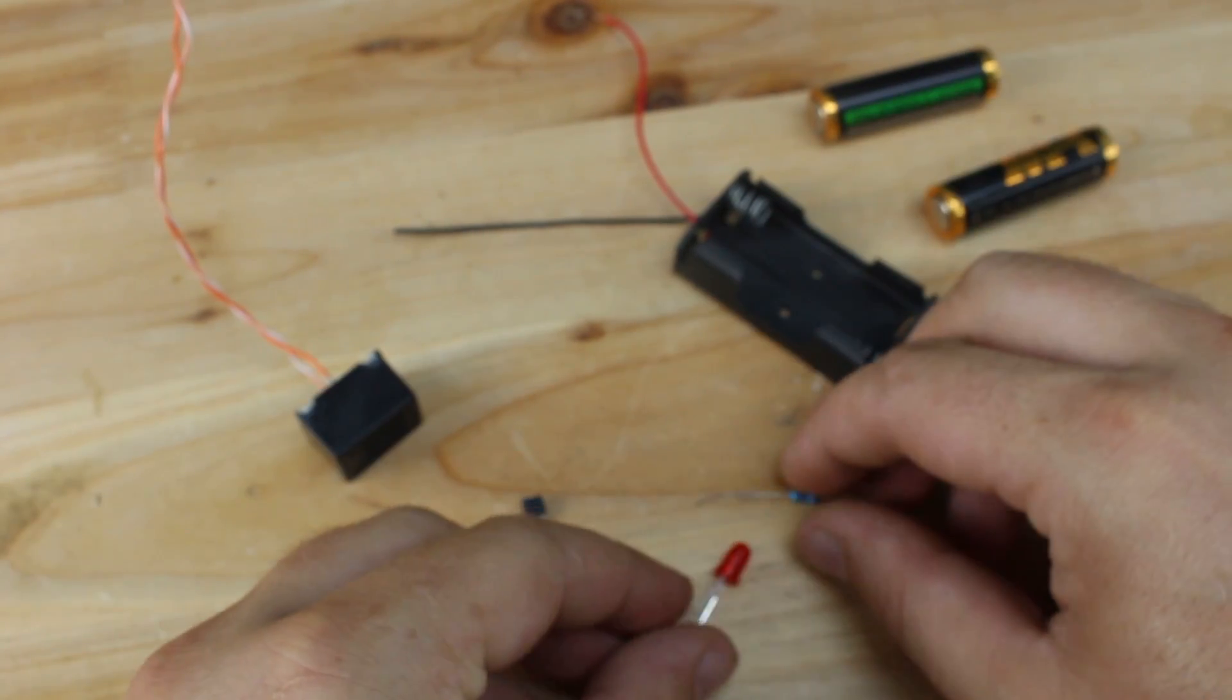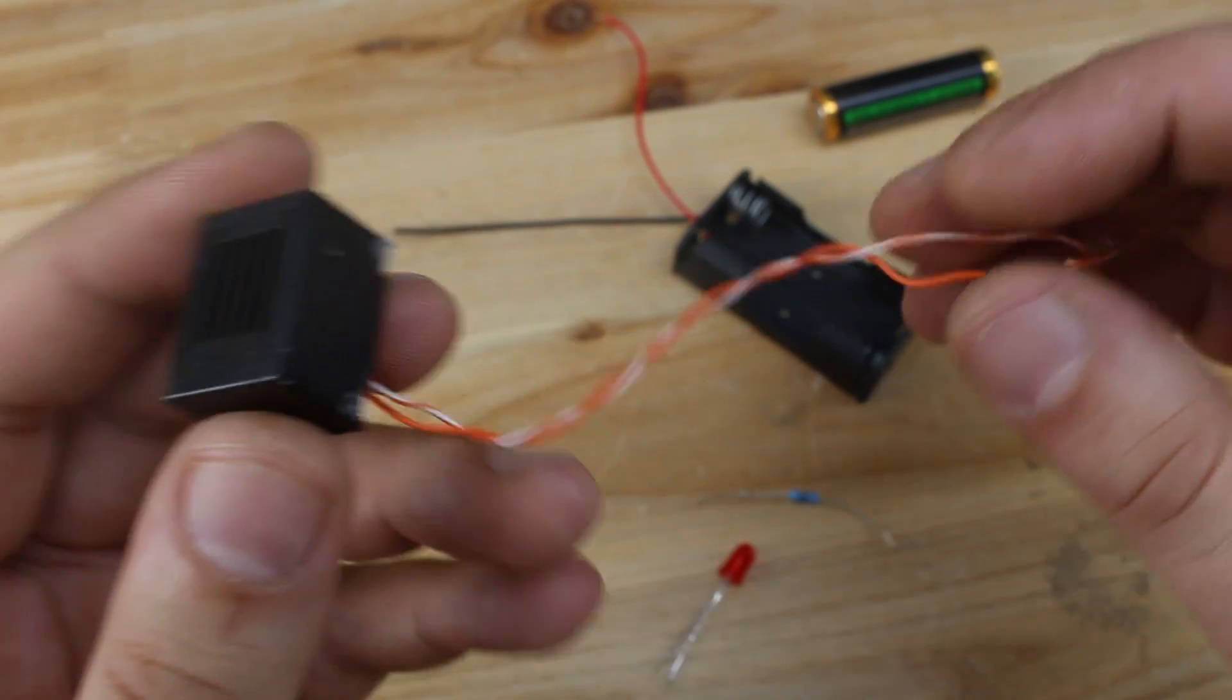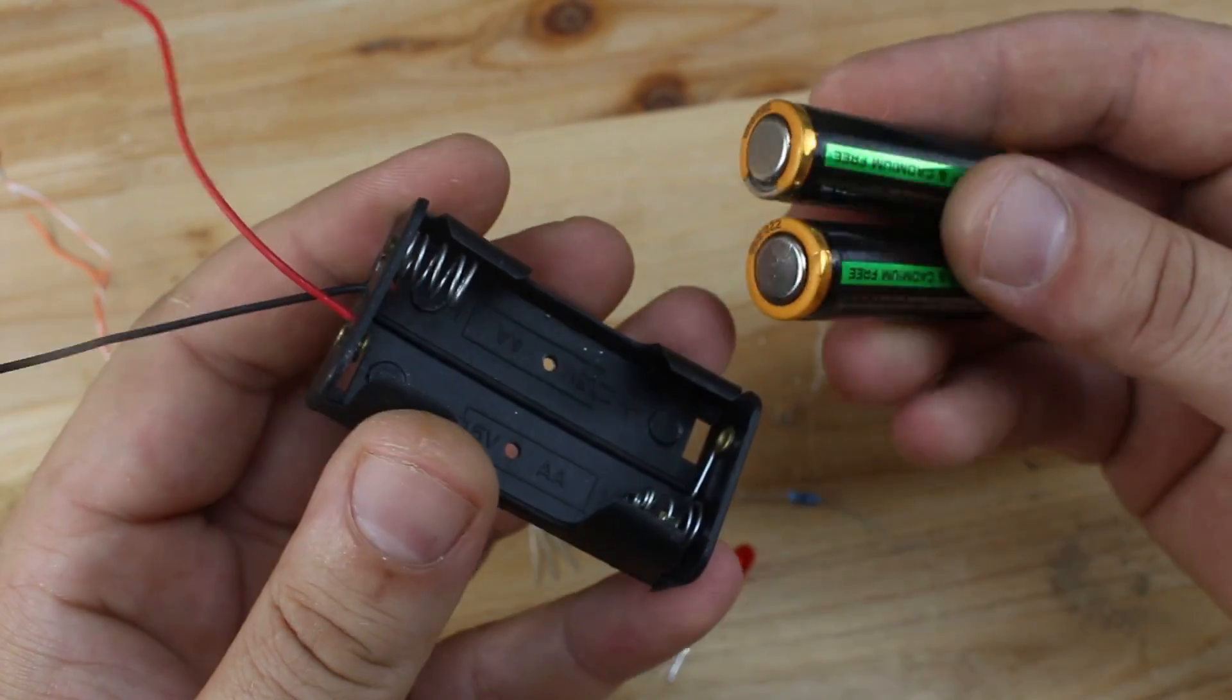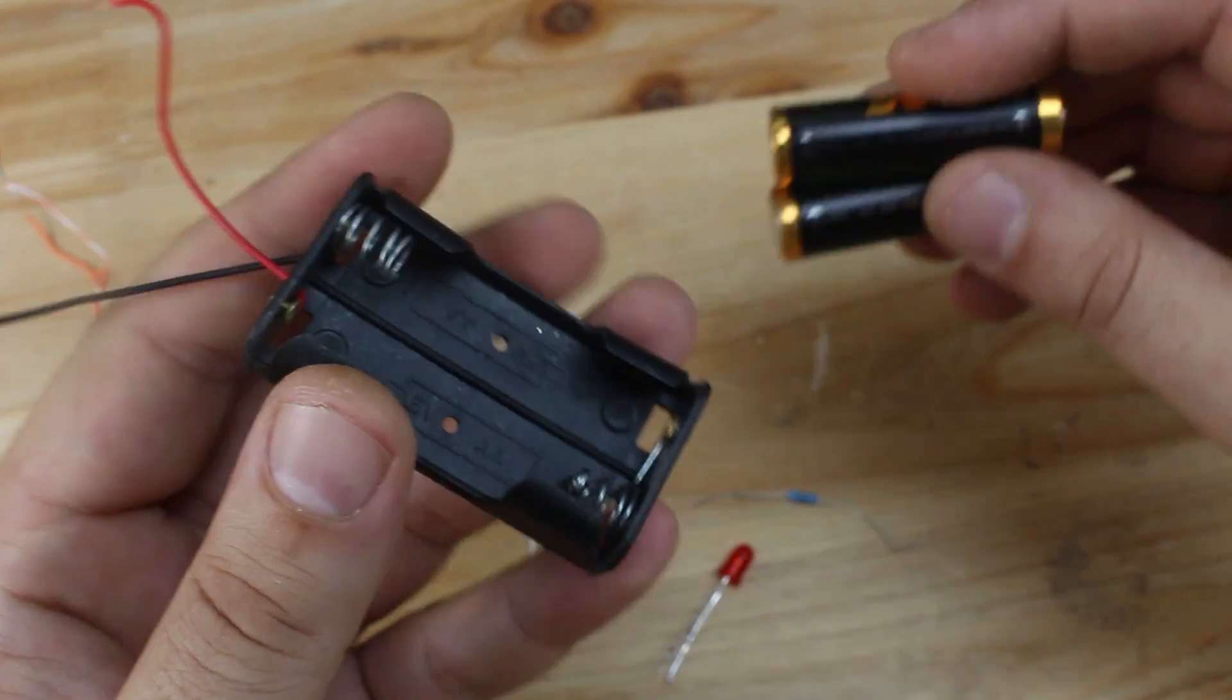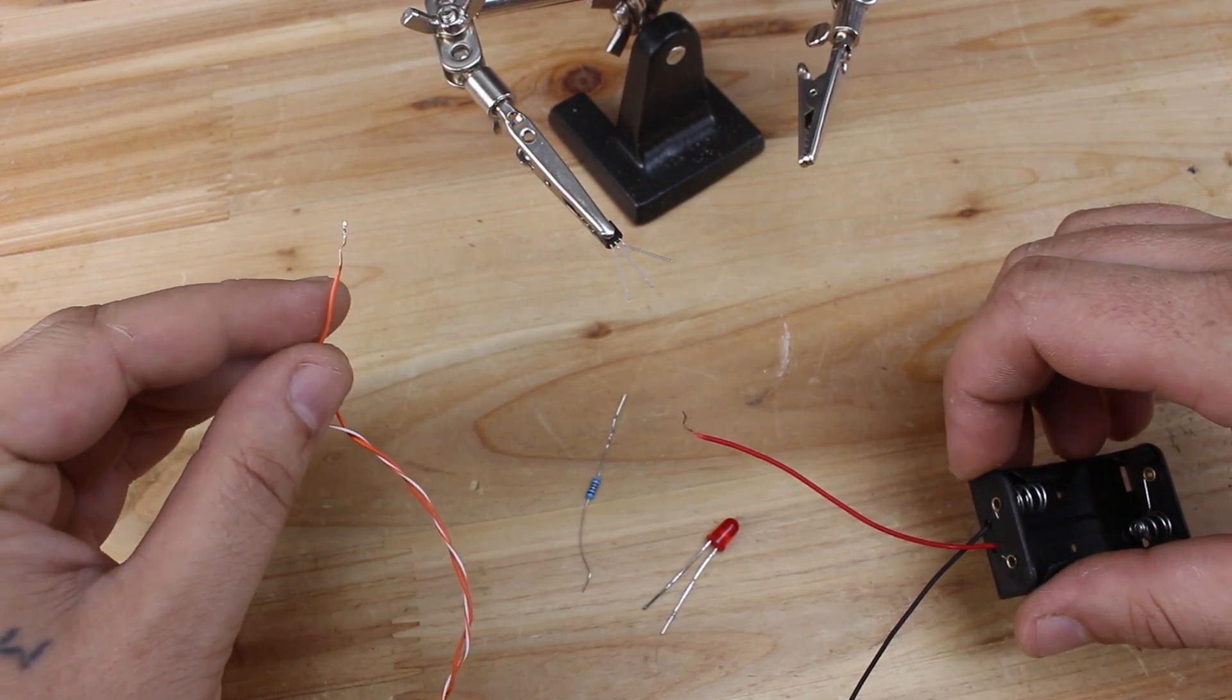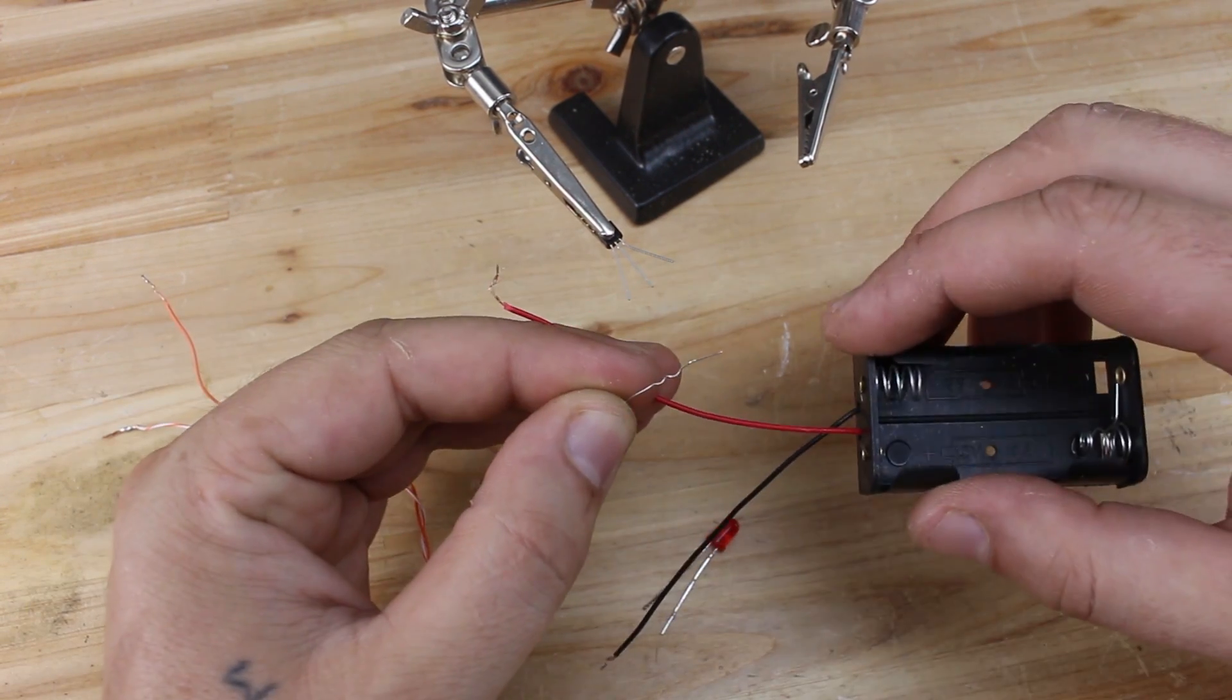A buzzer, battery holder and batteries. First we're gonna connect the positive wire from buzzer and resistor to positive wire of battery holder.